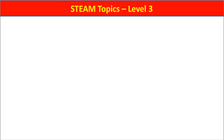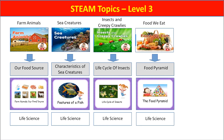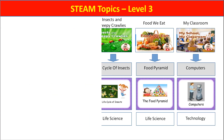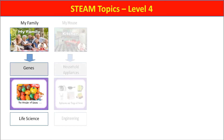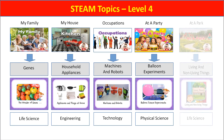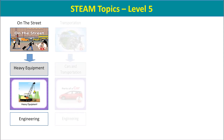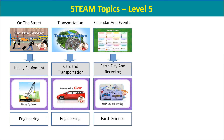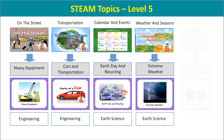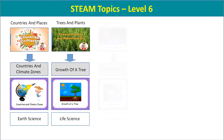At Levels 3 and 4, children explore these STEAM topics: Our Food Source, Characteristics of Sea Creatures, Life Cycle of Insects, The Food Pyramid, What Are Computers, What Are Genes, Household Appliances, Machines and Robots, The Balloon Experiments, and Living and Non-Living Things. At Levels 5 and 6, children explore Cranes and Other Heavy Equipment, Cars and Transportation, Earth Day and Recycling, Extreme Weather, and Sports Equipment.